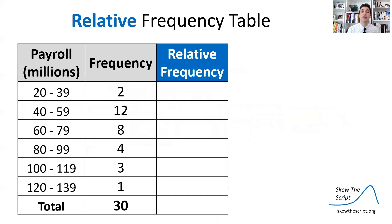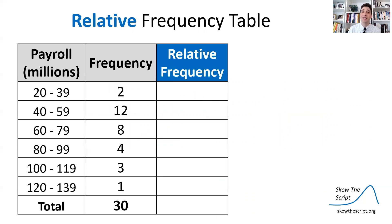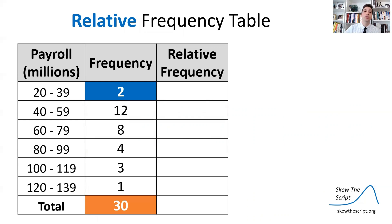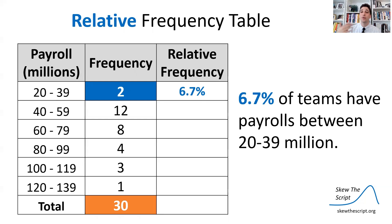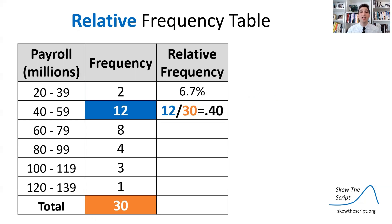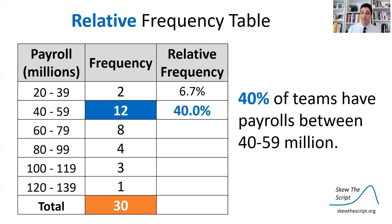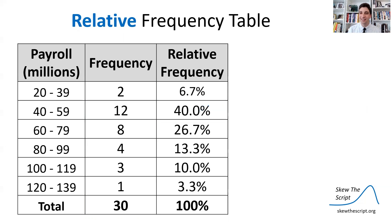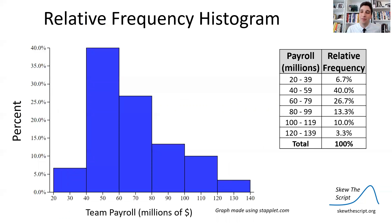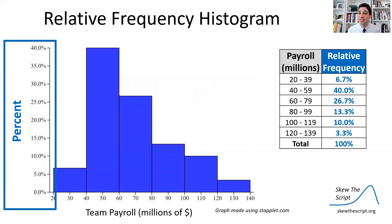In addition to a frequency table, there's also a relative frequency table, which is about percentages. For example, two out of 30 MLB teams paid their players between $20 to $39 million — that's 0.067, or 6.7%. Twelve out of 30 teams, or 40%, paid between $40 to $59 million. From these relative frequencies, we can make a relative frequency histogram — it's essentially the same as a frequency histogram, but the y-axis shows percent instead of counts. The shape looks largely the same.